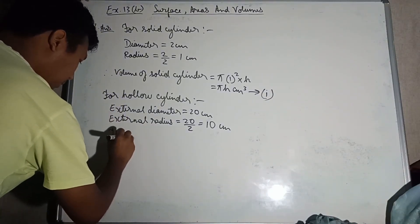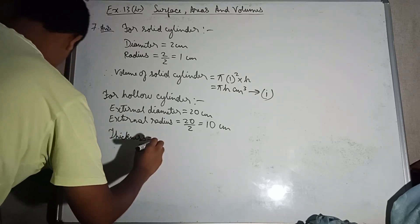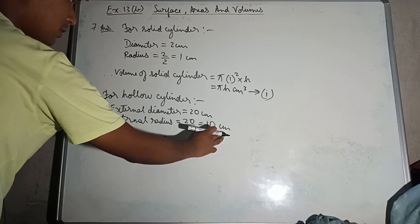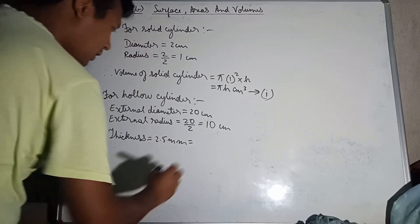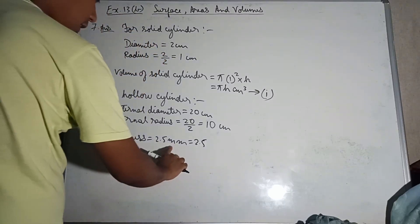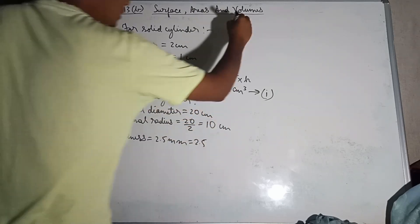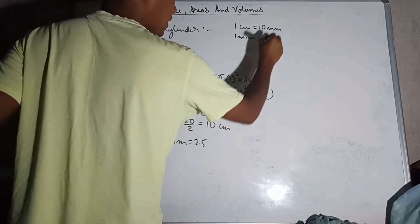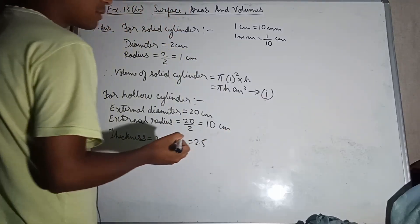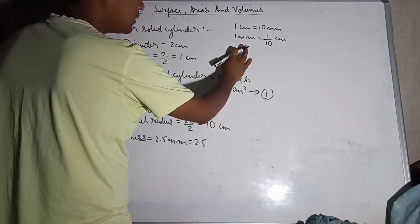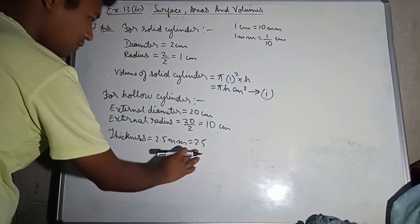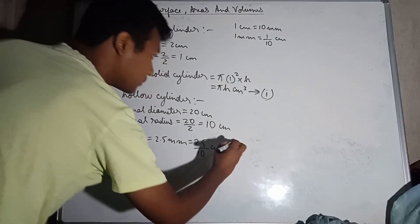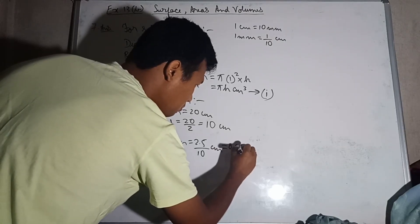Thickness means 2.5 millimeters. We need to convert millimeters to centimeters. Since 1cm equals 10mm, 1mm equals 1/10 cm. Therefore, 2.5mm equals 2.5/10 = 0.25 cm.